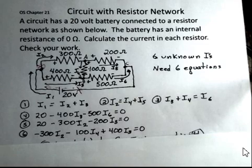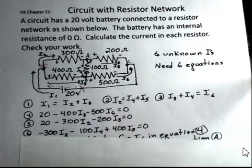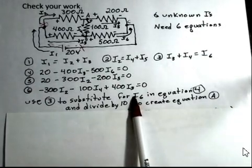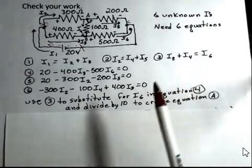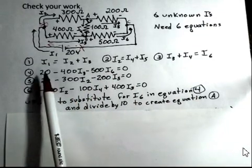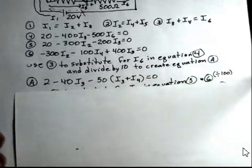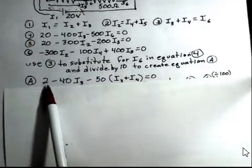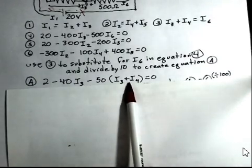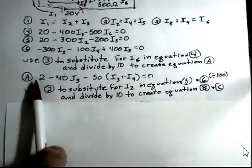And start using substitution to simplify things here. We can eliminate some of the currents. We'll get back and calculate their values later. But I'm going to use equation 3 and get rid of the symbol I6. The equation 3 tells us I can replace I6 with I3 plus I4. So I'm going to do that in equation 4. I'm also going to divide by 10. So you have 20, 400, and 500. The numbers can be simplified a little bit. So I'm going to divide by 10 and I get this equation. So instead of 20, I've got 2. Instead of minus 400, I've got minus 40. I've got the I3, minus 50. And now replace I6 with I3 plus I4. And now I'm going to take another substitution here.